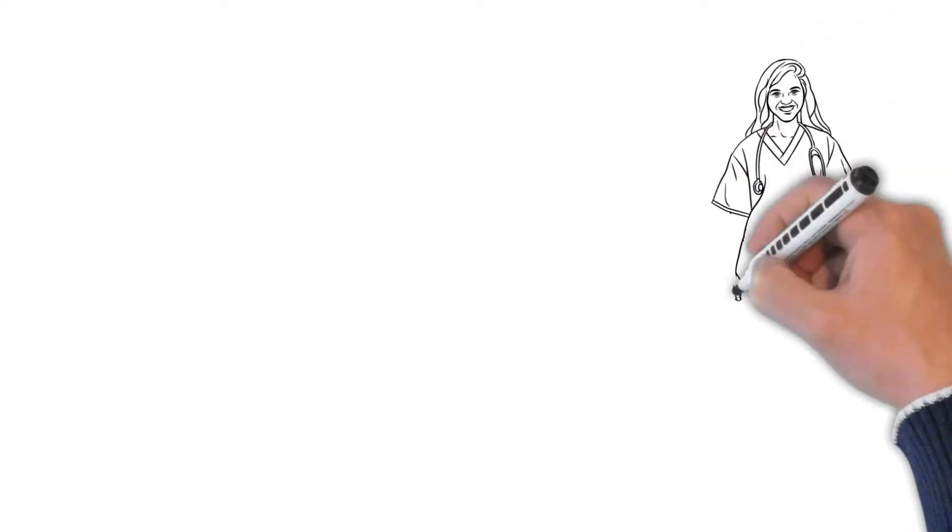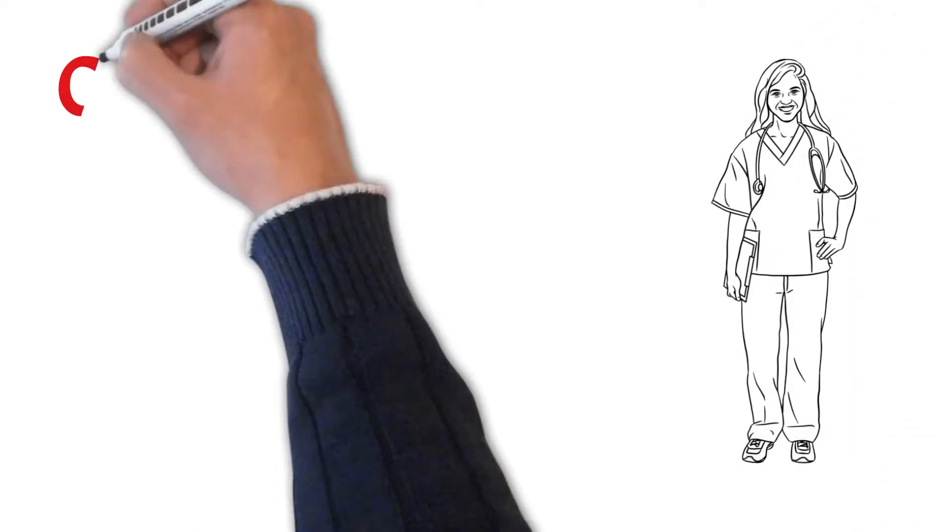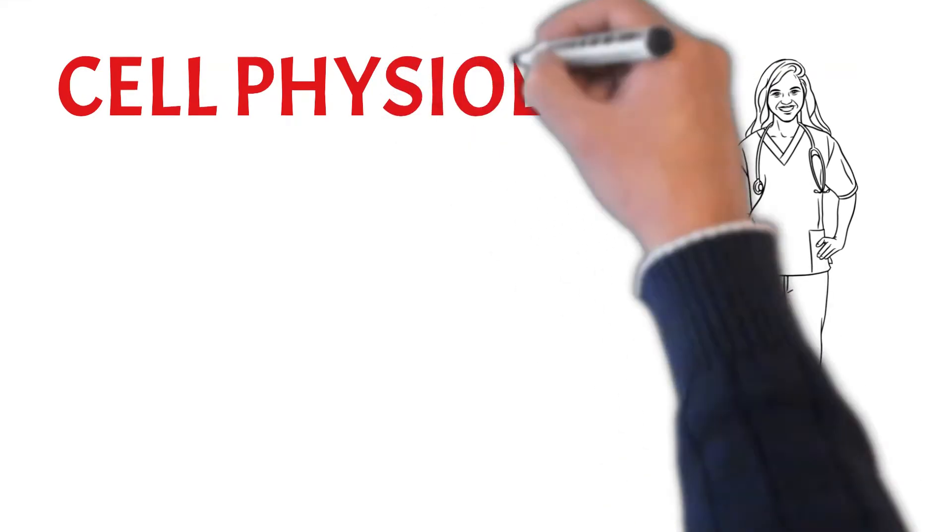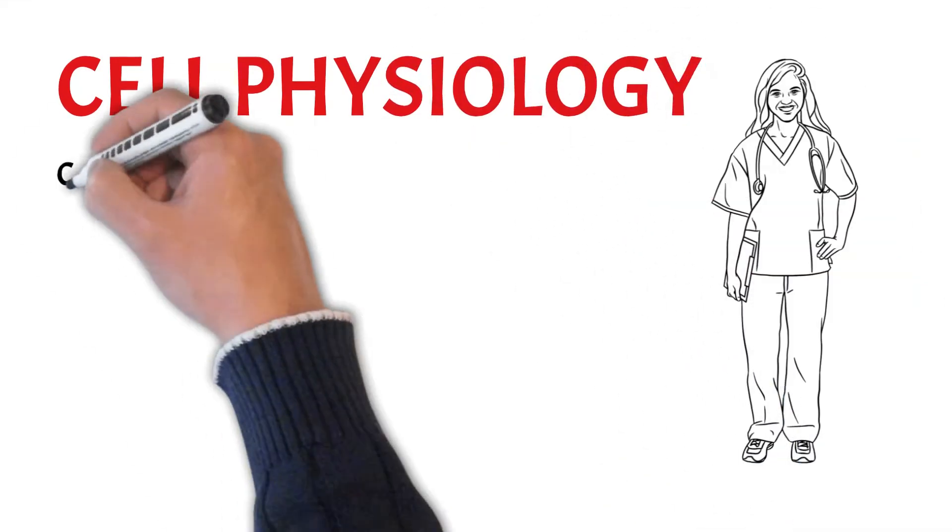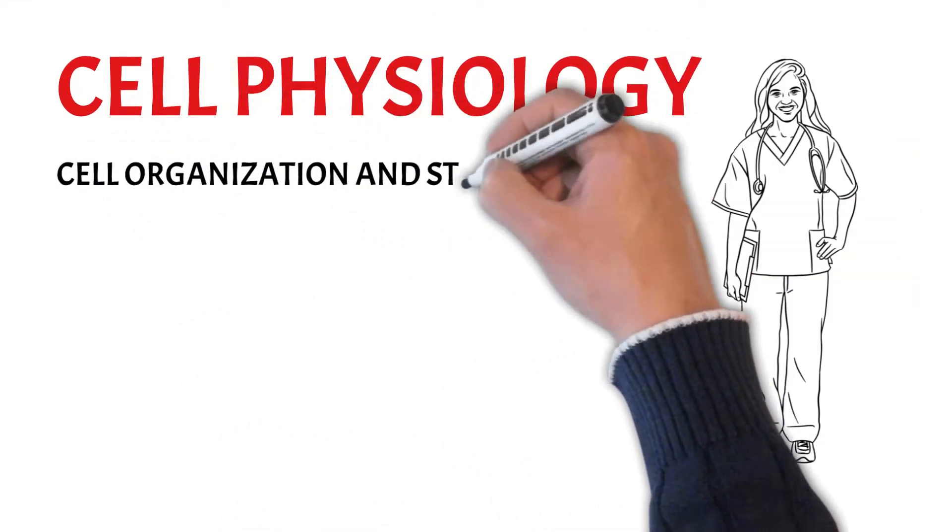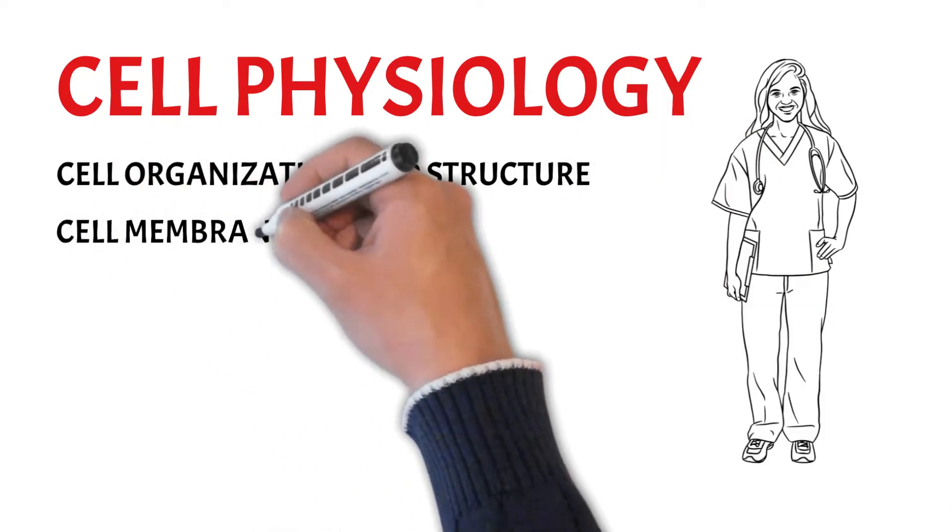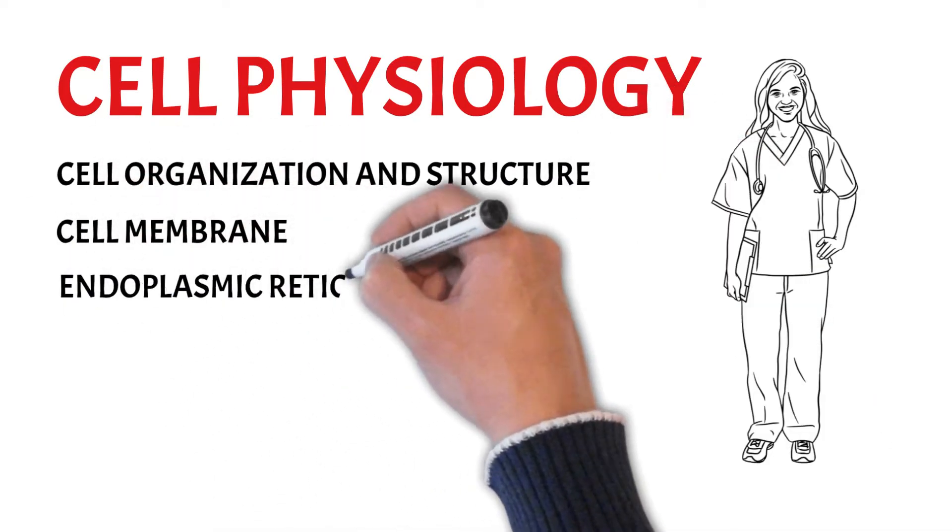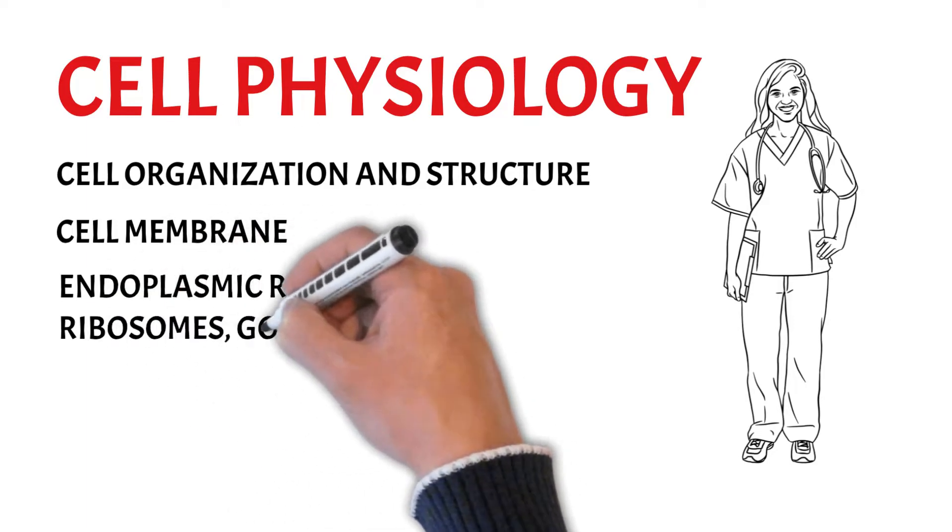Hello and welcome to another episode of Medicine Can Be Easy. Today we'll start with the physiology of the cell and we are going to look at its organization and structure, the cell membrane and three organelles: endoplasmic reticulum, ribosomes and golgi apparatus.